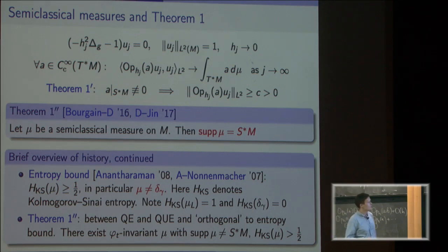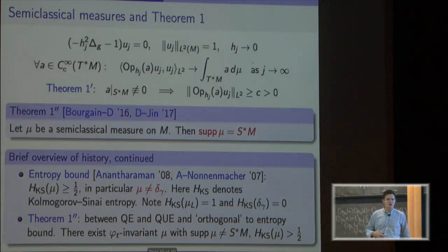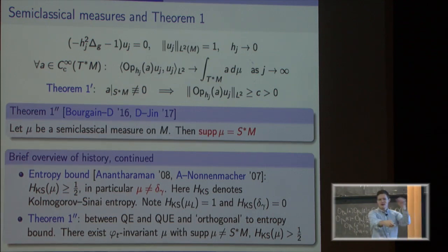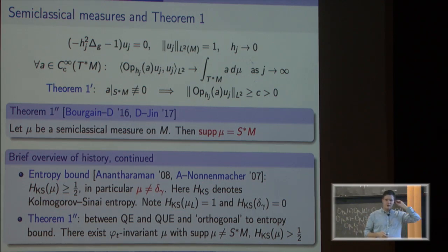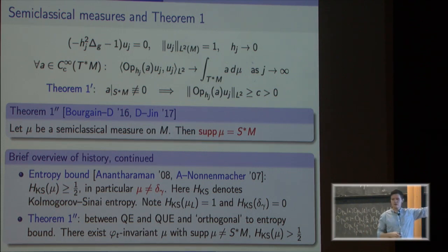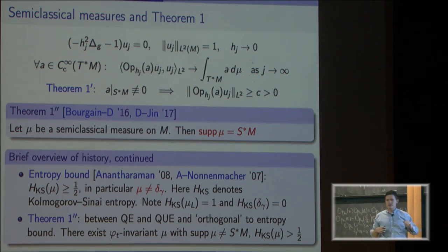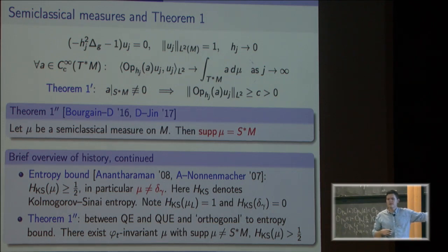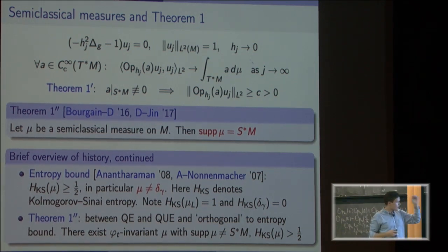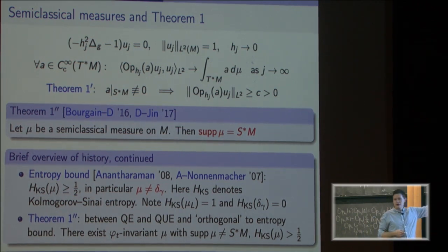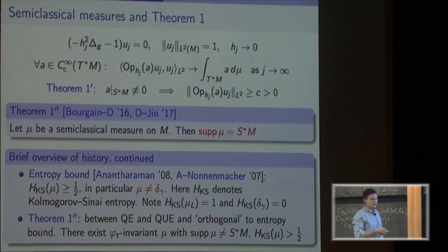Done with theorems — now we do proofs. That's a brief overview of what the results give. This setting of hyperbolic surfaces is a particular case of more general classical chaotic systems, and many related results hold in much higher generality as stated by Stefan. However, this result so far has only been proved for hyperbolic surfaces.